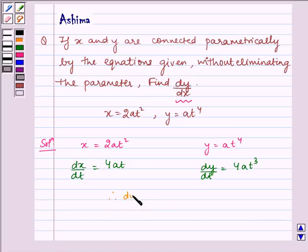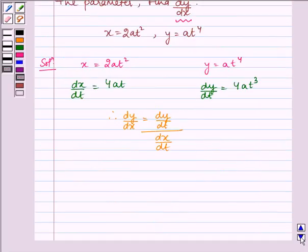Therefore, dy/dx equals dy/dt divided by dx/dt, which equals 4at³ divided by 4at